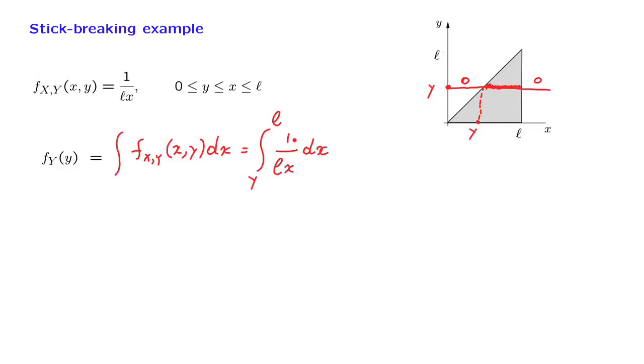Now, the integral of 1 over X is a logarithm. And using this fact, we can evaluate this integral. And it's 1 over L times the logarithm of L over Y. For what Y's is this a correct expression? Well, it makes sense only for those Y's that are possible in this experiment. And that's the range from 0 to L.